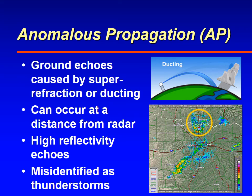Anomalous propagation is where you get ground returns from a great distance away from the radar. It's caused by super refraction or ducting, meaning the radar beam is bent towards the ground and actually strikes the ground at a great distance. It usually shows up as really strong radar returns and many people misidentify those as thunderstorms. To verify, use other sources — check satellite to see if there are any thunderstorms at that location, and use other radars to scan that area.